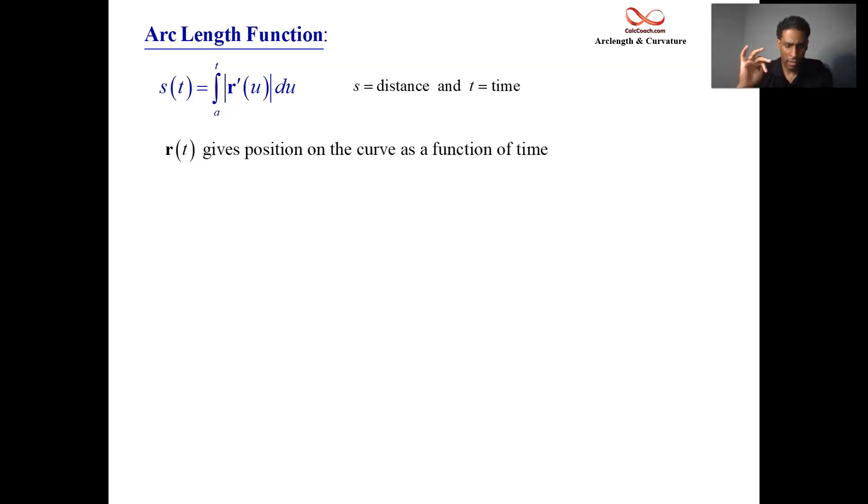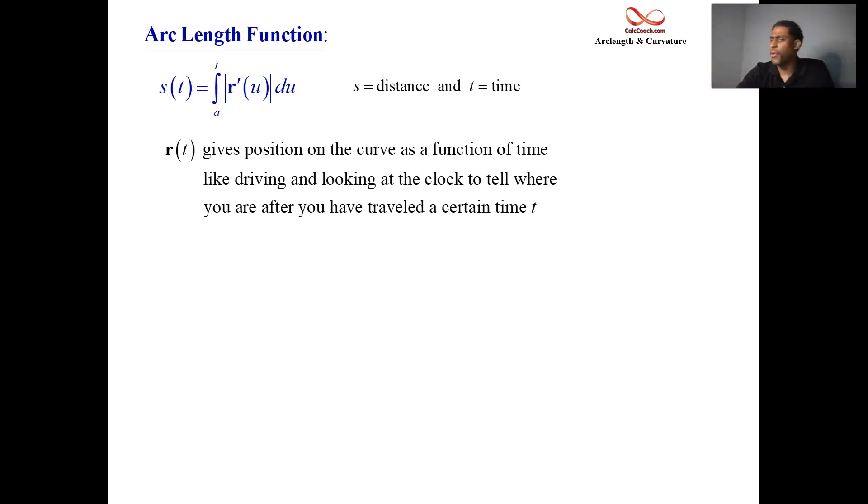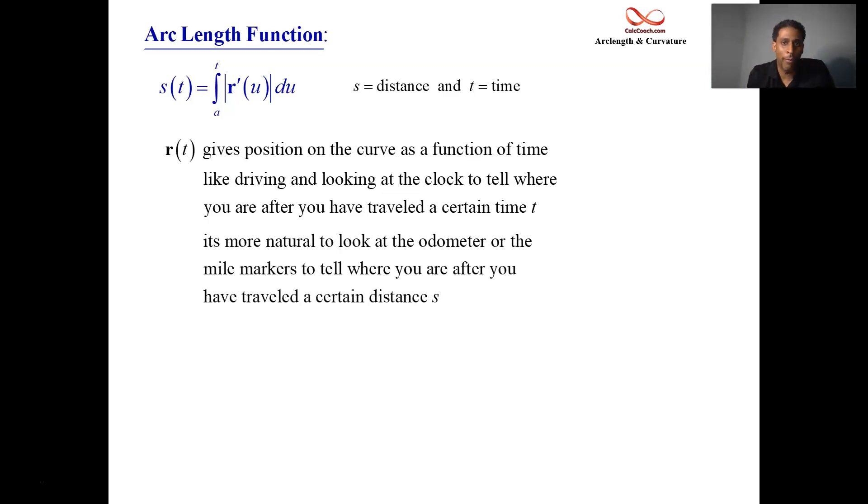You see, normally we're given position function as a function of time. Time is your input. But there's something that's kind of odd about that. It's like you're driving along a road, and you want to know where you're at. So to figure out where you're at, you look at the clock. After a certain time T has passed, you're trying to figure out where you're at. This doesn't seem right. If you want to figure out where you're at, what do you do in the car? You look at the odometer. You're looking for how many miles you've traveled.